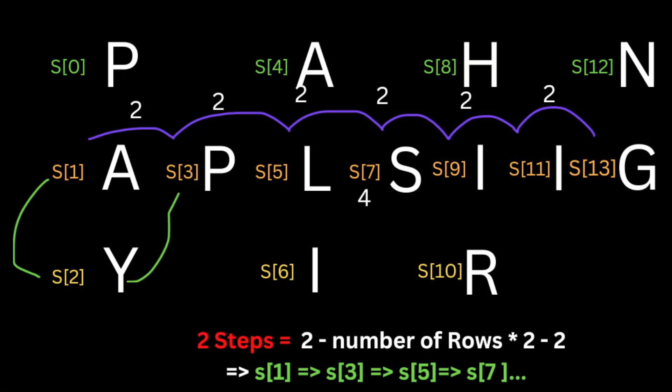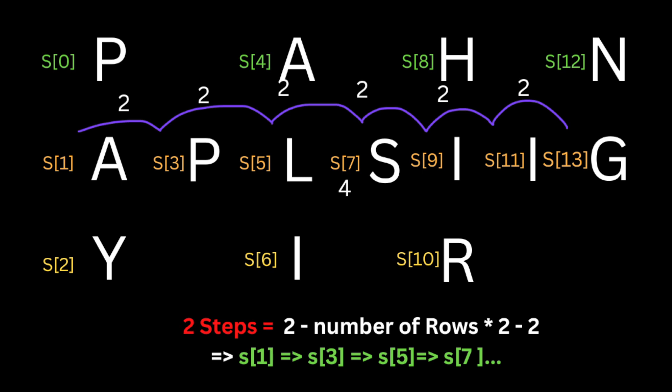...when we try to read the second row. So to read the second row, we're gonna reduce the step by two. Because let's say we're gonna read the letter P, how many steps we're gonna need? One and two. So if we do the basic calculation, the difference between the first row and second row is two each time we read a letter.